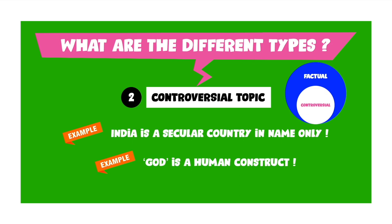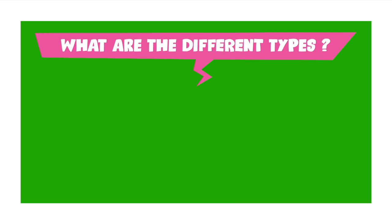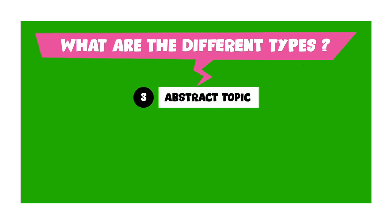I personally like controversial topics a lot more than factual topics. The third kind of topic is the abstract topic, and as I already mentioned, an abstract topic is mostly nonsense and you are required to make some sense of it. Here is an example: Horses cry and pigs fly. You will note that this topic still makes some sense, and hence it's a semi-abstract topic.